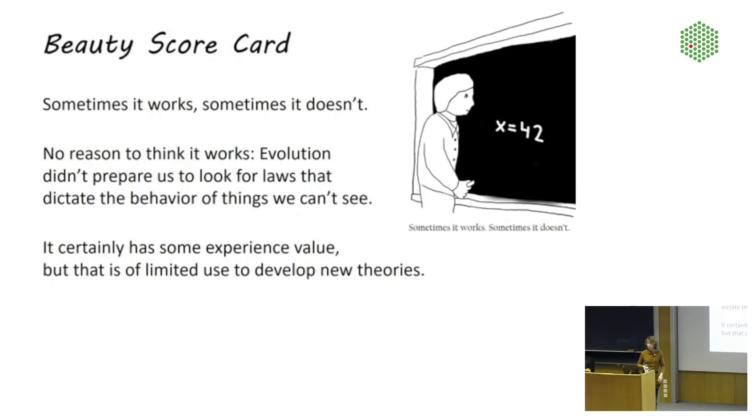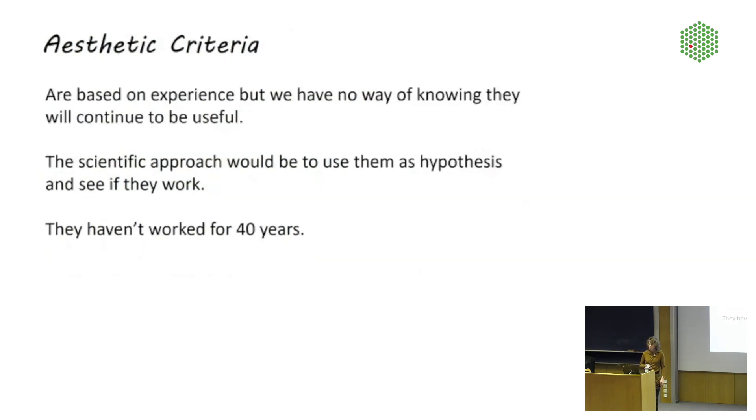And there's just generally no reason to think that this should tell us anything about the working of the foundations of physics. So evolution just did not prepare us to look for laws that dictate the behavior of things that we can't see. It certainly has some experience values. So this is what Weinberg was trying to get at in his speech with the horse breeder. But that is of limited use to develop new theories. Indeed, there is a philosopher of science by name McAllister who has argued that anytime you have a paradigm shift in the foundations of physics, it's actually our ideals of beauty that shift. So in summary, aesthetic criteria are based on experience, but we have no way of knowing that they will continue to be useful. The scientific approach would be to use them as hypothesis and see if they work. And if they don't work, then we should discard them. But that has not happened.